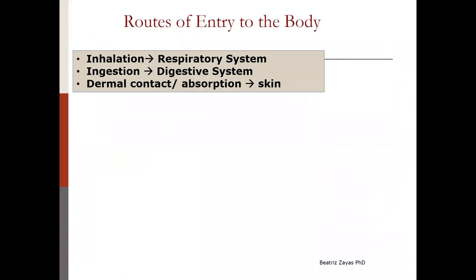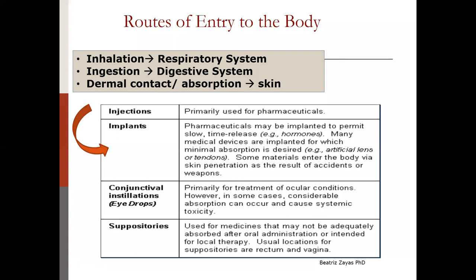When we talk about routes of entry to the body, specifically in the environmental field, there are three: inhalation to the respiratory system, ingestion to the digestive system, and dermal contact through the skin. For those more interested in pharmacology, there are also other routes such as injections, implants, eye drops, and suppositories.